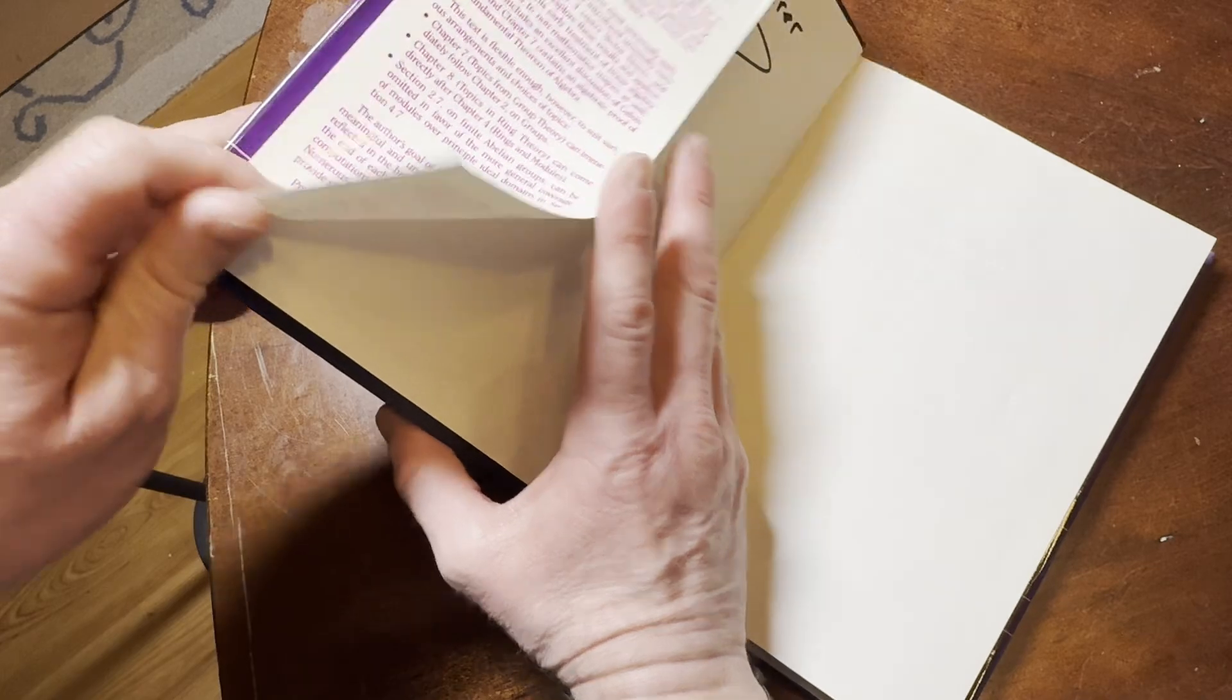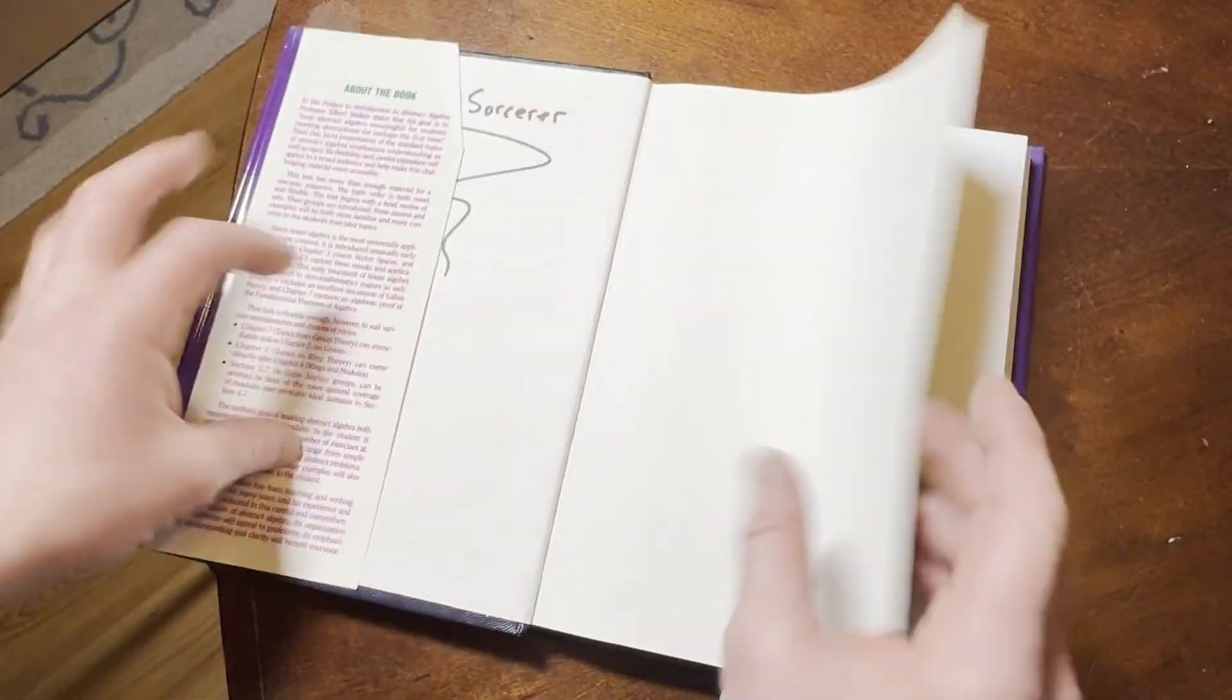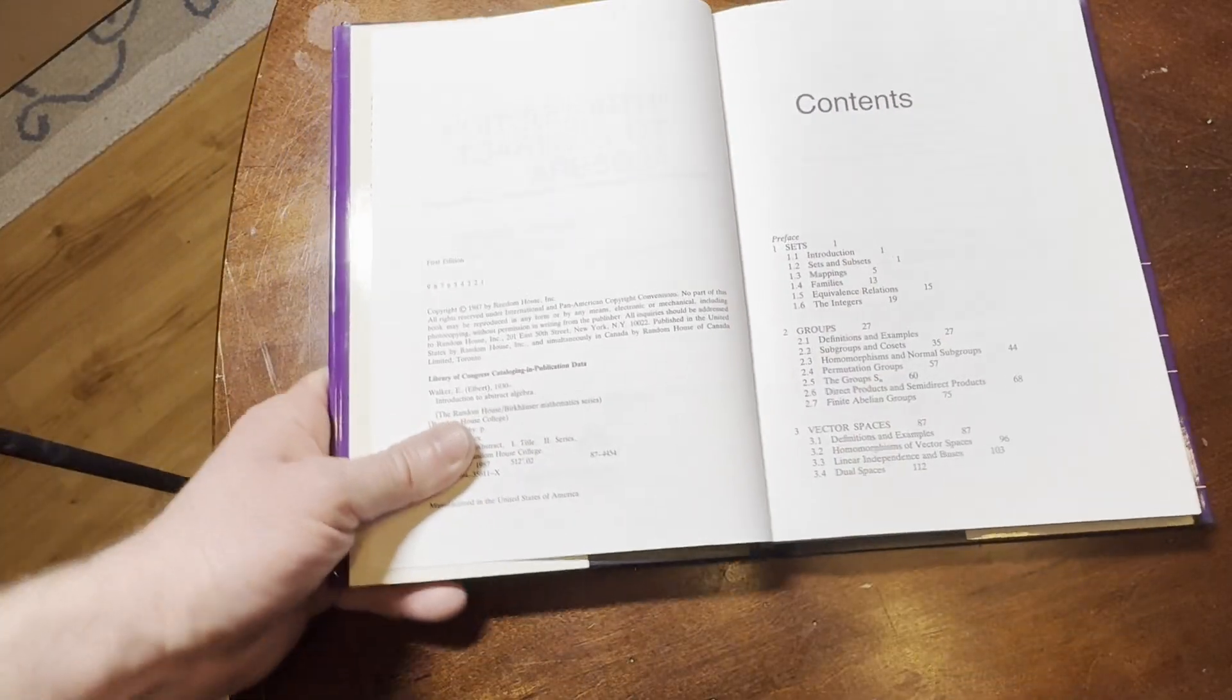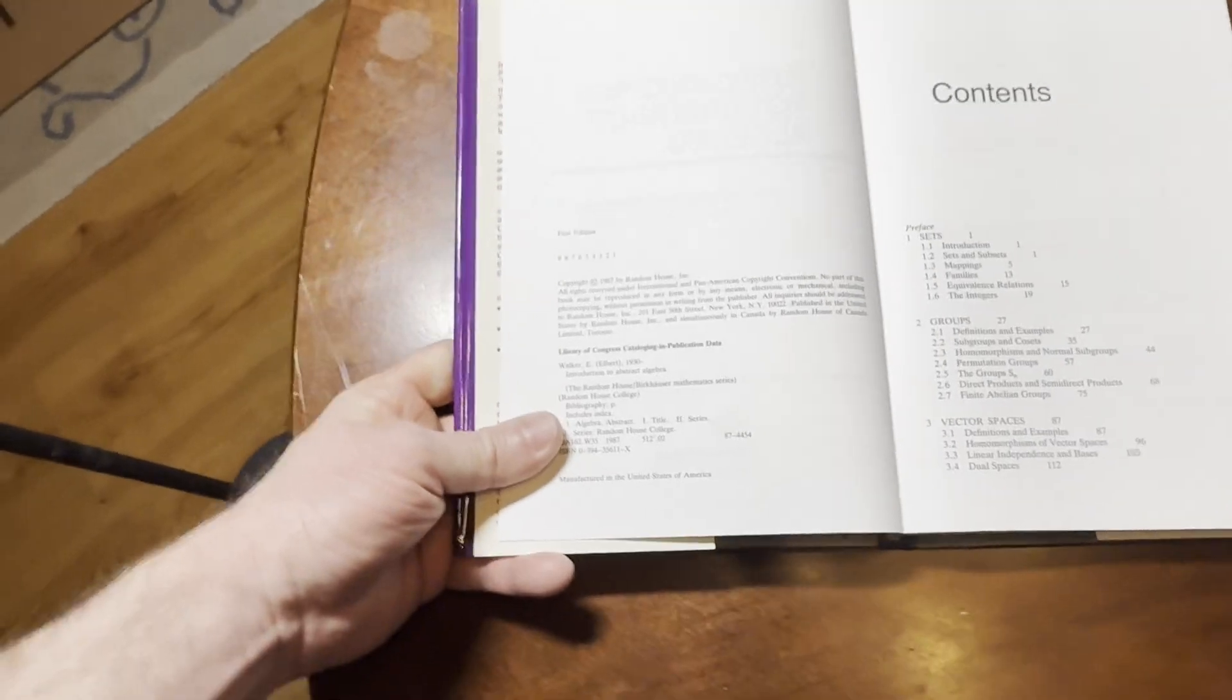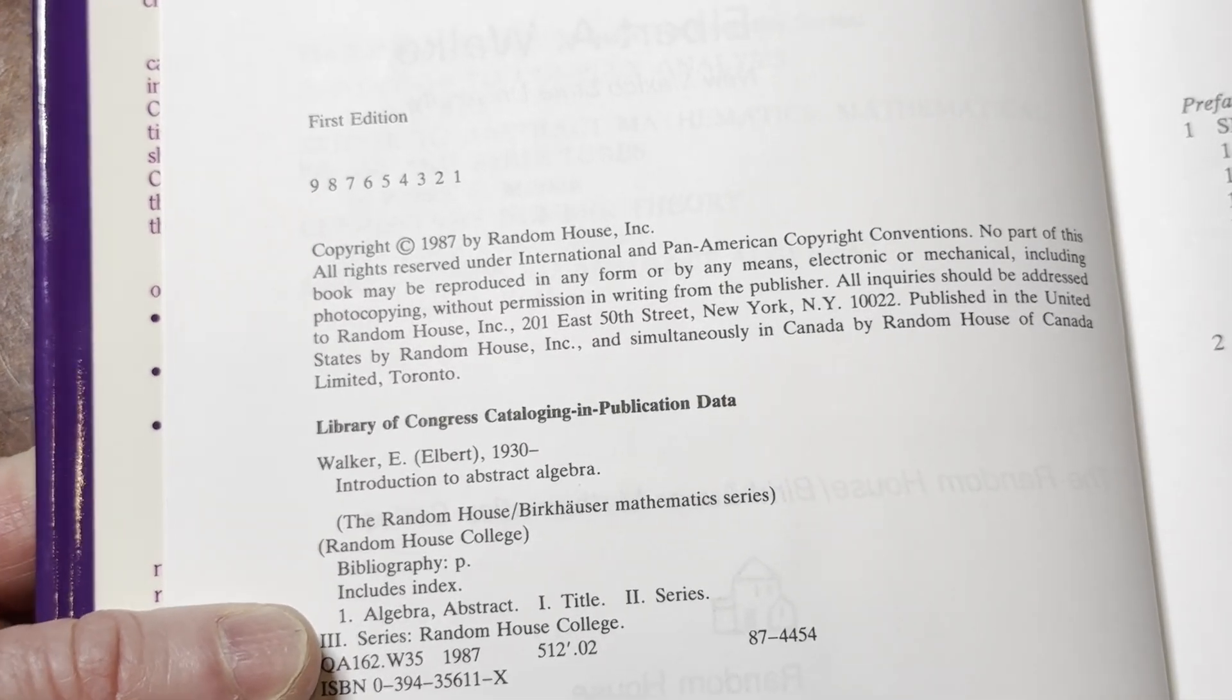And it does have the dust jacket. Let's take the dust jacket off so we can see what it looks like. There it is. Really quite nice. And Abstract Algebra is probably my favorite mathematics subject. So I have at least 30 Abstract Algebra books. Copyright 1987.